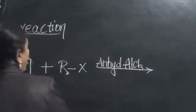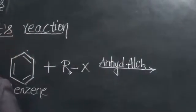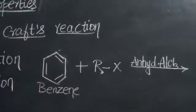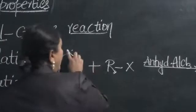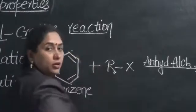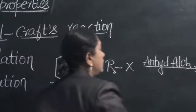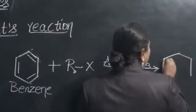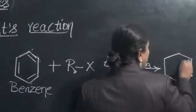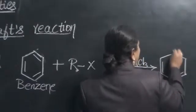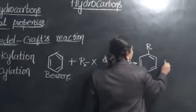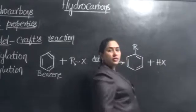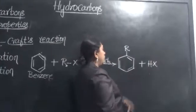So in presence of anhydrous aluminum chloride what happens? The alkyl group takes an attachment with the benzene ring and the hydrogen will react with the halogen and comes out as hydrogen halide. So let us see what is the product formed. With the benzene ring, alkyl group takes the attachment and hydrogen from the benzene ring will react with the halogen and becomes hydrogen halide.